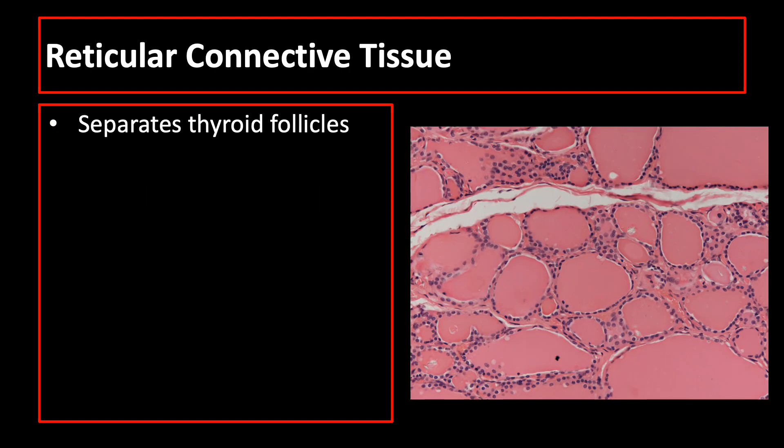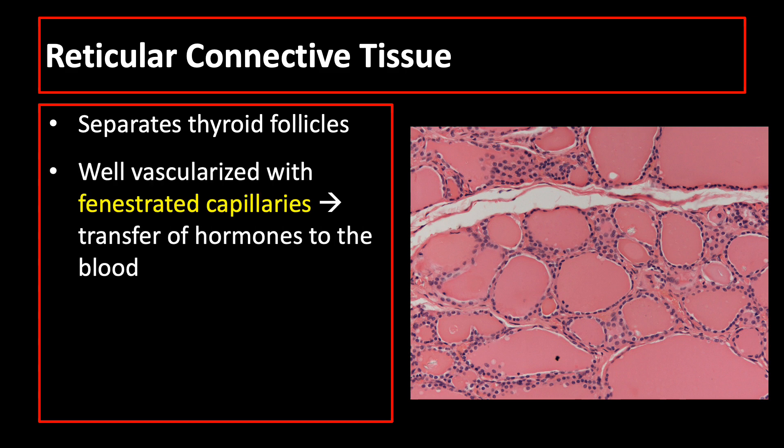Follicles are densely packed together, separated from one another only by sparse reticular connective tissue. This stroma is well vascularized with fenestrated capillaries for easy transfer and release of hormones to the blood, reaching different parts of the body.